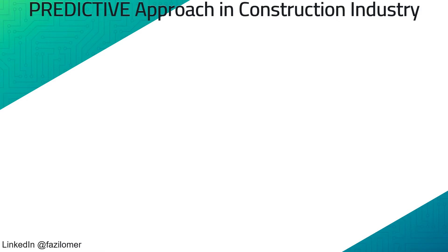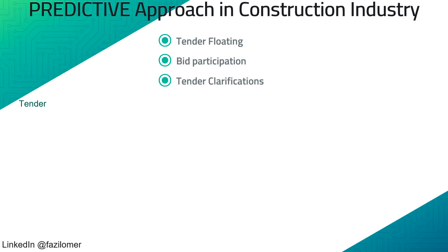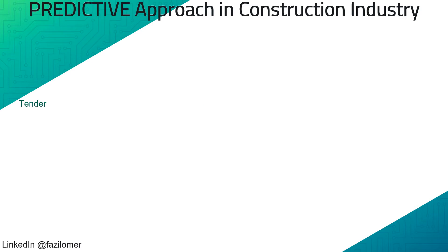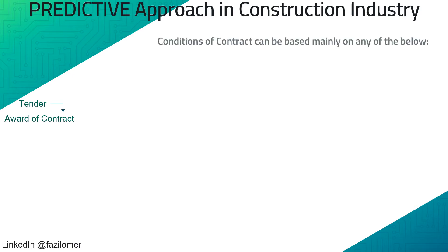We will now see common processes in a predictive project management approach in the construction industry. The client or employer will float a tender or request for proposal. Qualified contractors will participate in the bid. There will be tender queries and clarifications, and bid review reports showing the various aspects of participated contractors. Gauging those aspects, the project will be awarded to the contractor. Contracts are mainly based on FIDIC's standard forms of contract, though some industries follow other standard forms.